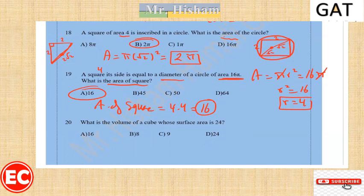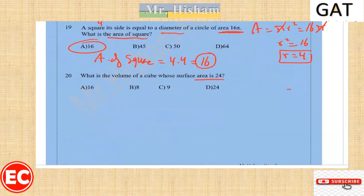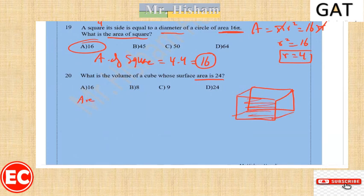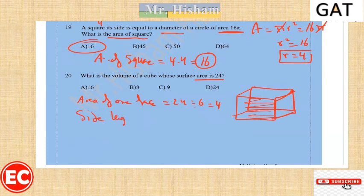Question twenty: what is the volume of a cube whose surface area is 24? In a cube there are six faces, each a square. So the area of one face is 24 divided by 6 = 4. The side length is the square root of 4 = 2. The volume is 2 cubed, which equals 8.